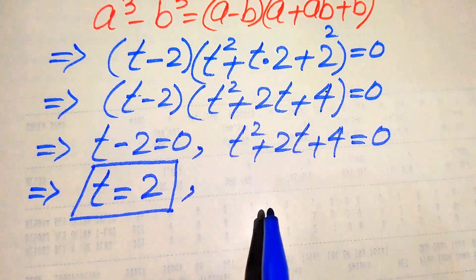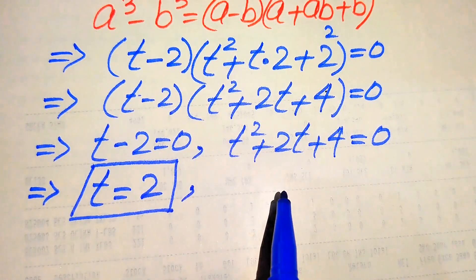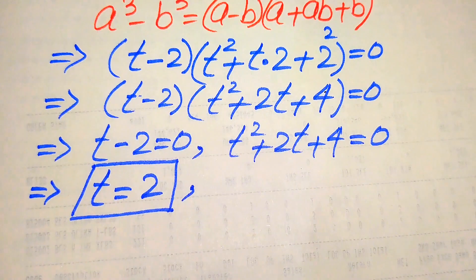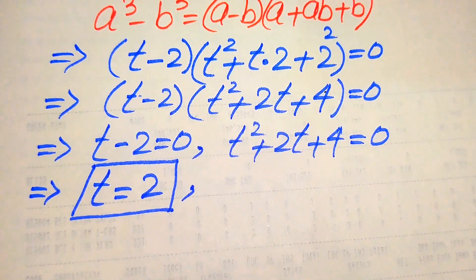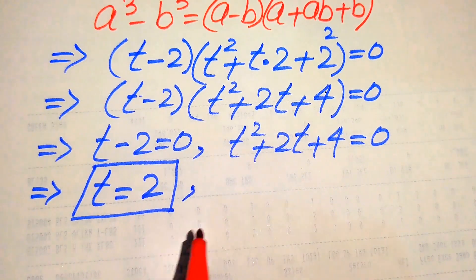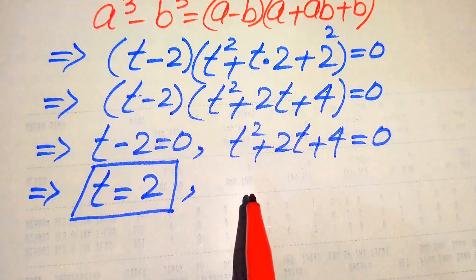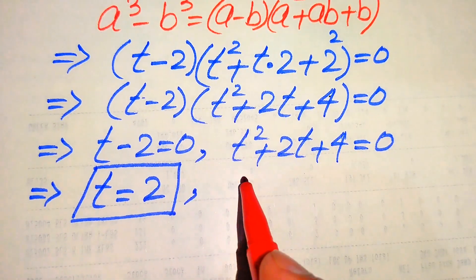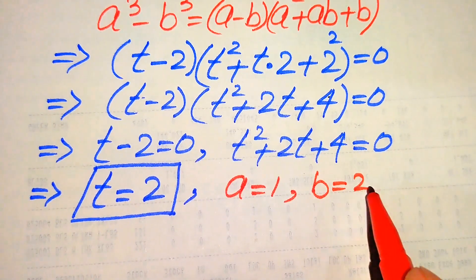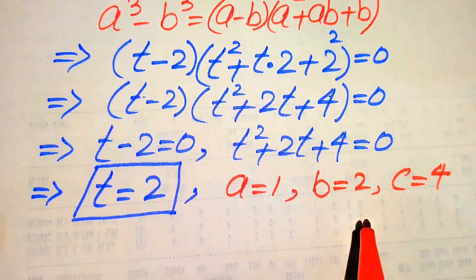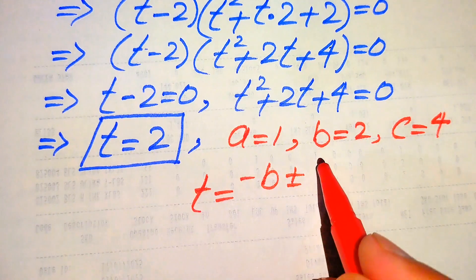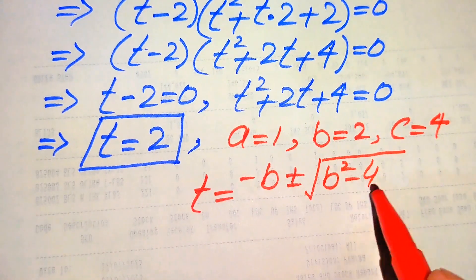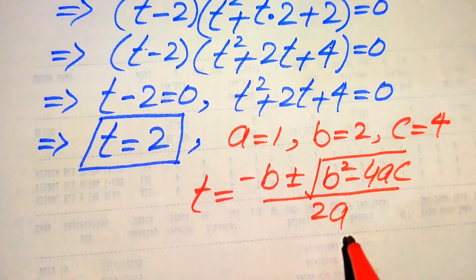To find the other two roots we solve the quadratic equation. There are three methods: factorization, completing the square, and the quadratic formula. We use the quadratic formula. The coefficients are a equals 1, b equals 2, and c equals 4. The quadratic formula is t equals minus b plus or minus square root of (b squared minus 4ac) divided by 2a.